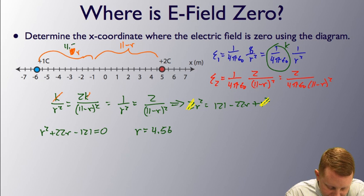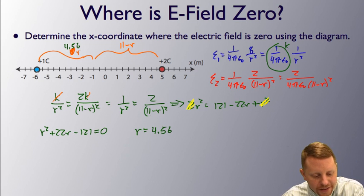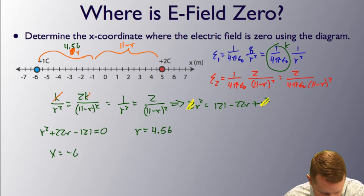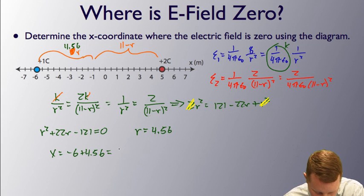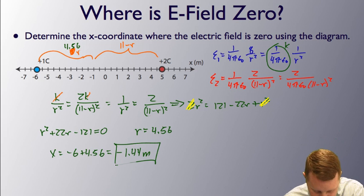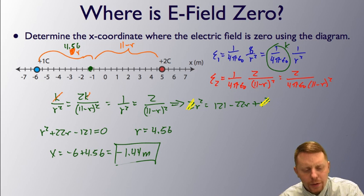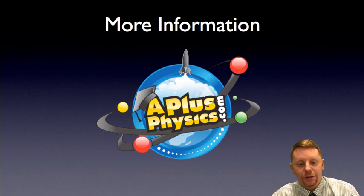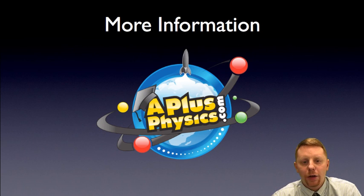So this distance is 4.56 units from negative 6, meaning the x value where the field is zero is negative 6 plus 4.56, which gives x equals about negative 1.44 meters. That shows up right about where we estimated it should be. Hopefully that gets you started with charges and Coulomb's law. If you need more help, check out AplusPhysics.com. Thanks for your time and make it a great day.